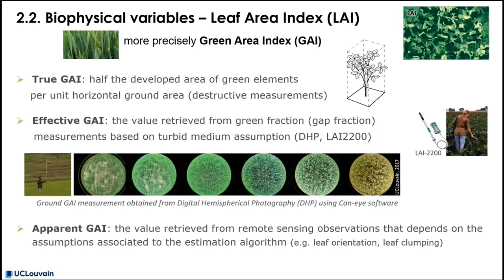Most commonly, we use digital hemispherical photographs, like here, which provide the green fraction or the gap fraction, and estimate it based on a turbid medium assumption.